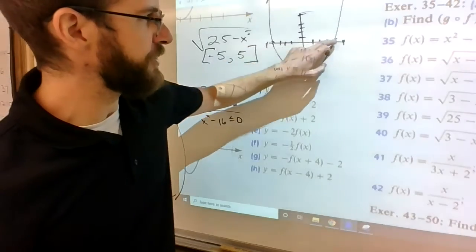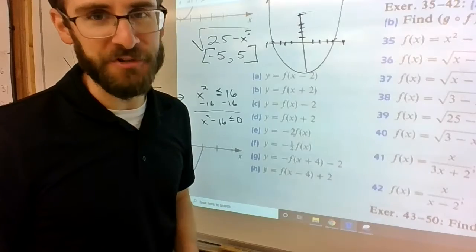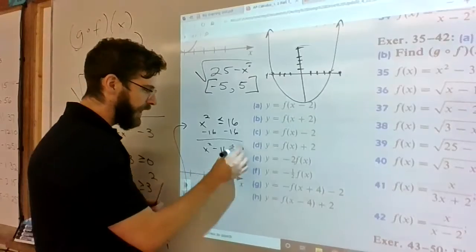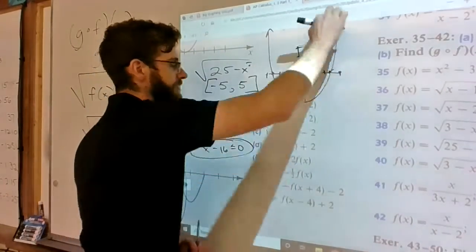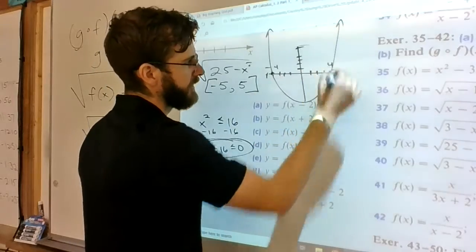Okay, bottom line: x² - 16 looks like this as a parabola and it's less than or equal to zero between these two points. I think I've recovered, so where is this less than or equal to zero? Between -4 and 4.